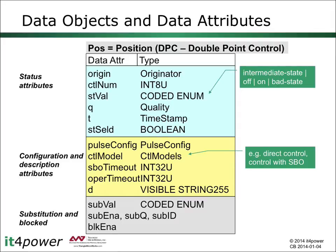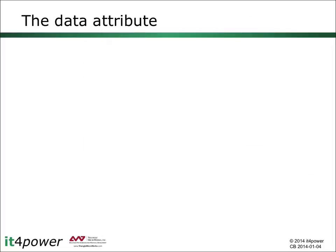Functional constraints are used to classify the data attributes based on their purpose. In the example shown, the functional constraint ST identifies the status attributes, CF the configuration attributes, or SV the attributes related to substitution. We also see that data attributes may be of a basic type, like the operate timeout, which is a 32-bit unsigned integer, or there may be further structures like the timestamp, shown in the next slide.